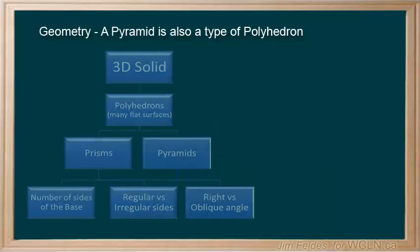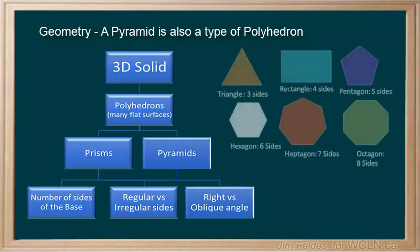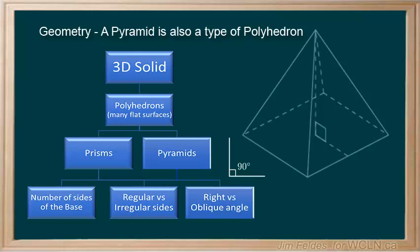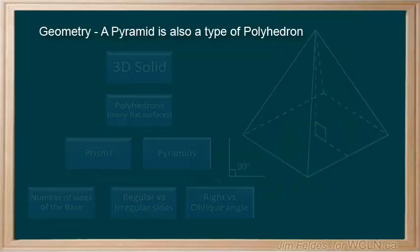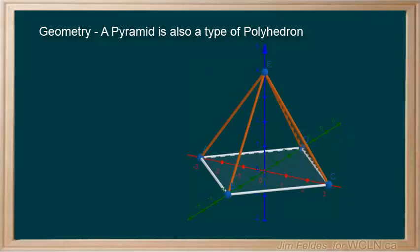As with prisms, we can name pyramids by checking the base for both the number of sides and if it's a regular polygon, and we look for a right angle between the base and apex. We can start with any polygon and from the base's vertices start extending lines, but this time only to a point. Because all lines converge to the apex, the sides of a pyramid always form triangles.